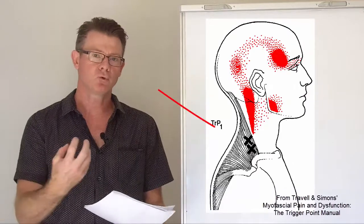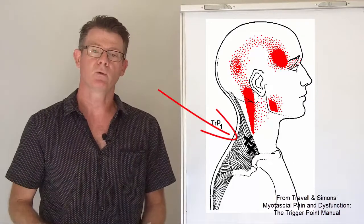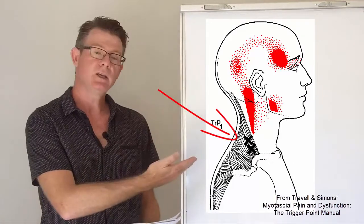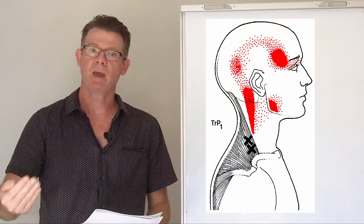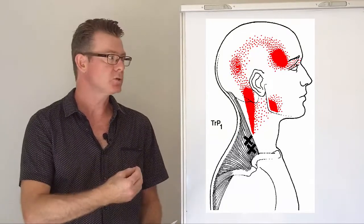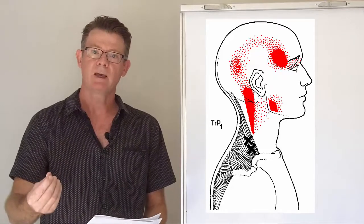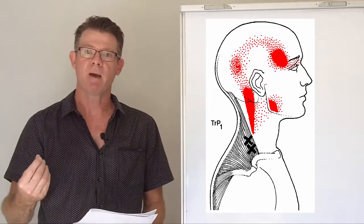When they're overloaded, they develop trigger points, or knots as you might call them. What you see here is where you feel the referred pain. Those knots in the trapezius refer pain wherever you see red. That's a common headache pattern.